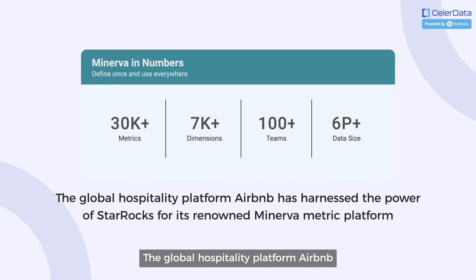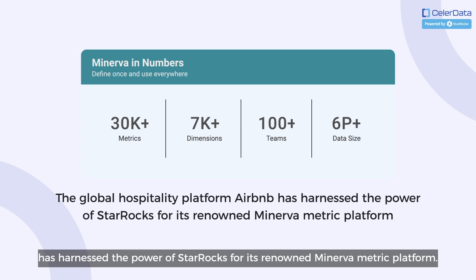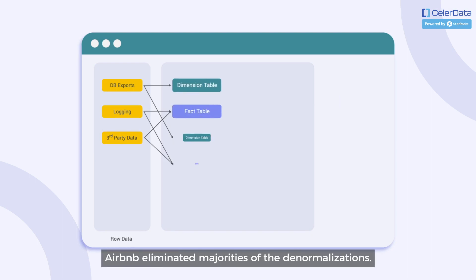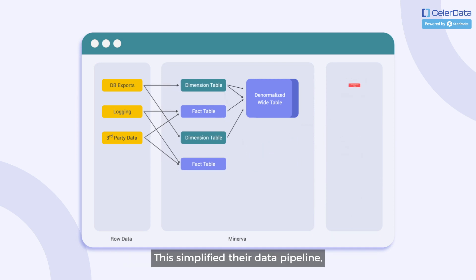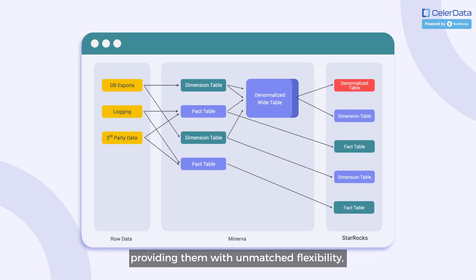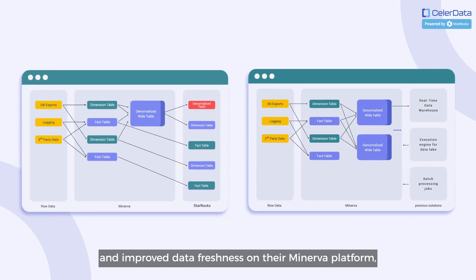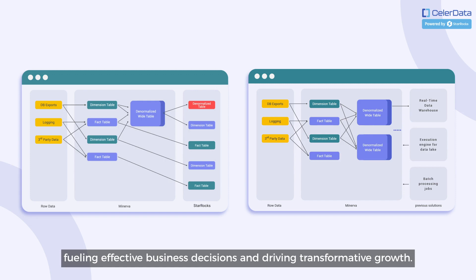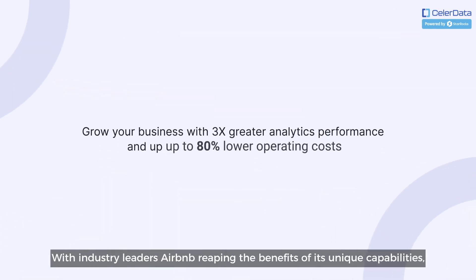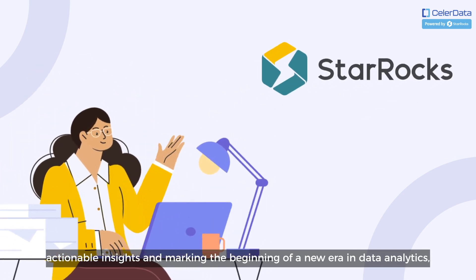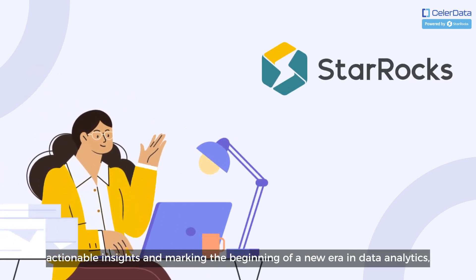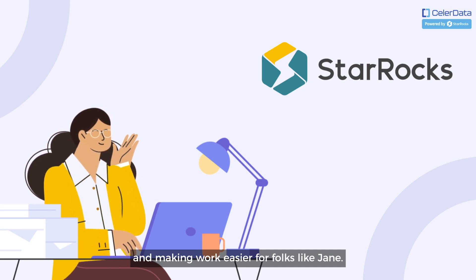This transformative shift is trending amongst industry leaders. The global hospitality platform Airbnb has harnessed the power of StarRocks for its renowned Minerva metric platform. By adopting StarRocks, Airbnb eliminated the majority of its denormalizations, simplifying their data pipeline and providing unmatched flexibility and improved data freshness — fueling effective business decisions and driving transformative growth. StarRocks is driving powerful, actionable insights, marking the beginning of a new era in data analytics and making work easier for folks like Jane.